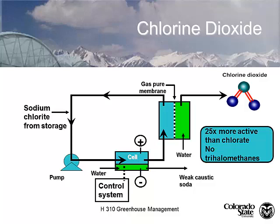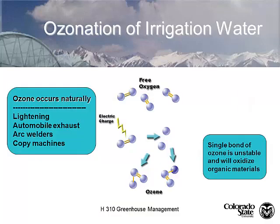Chlorine dioxide generators push sodium chloride through an electrified cell to generate chlorine dioxide gas. Most municipal water systems now use chlorine dioxide generators. For most greenhouses, they're too expensive unless you're 30–40 acres in size. However, there are now concentrated chlorine dioxide liquid formulations with relatively good shelf life, and my research group is currently working with these liquid formulations.